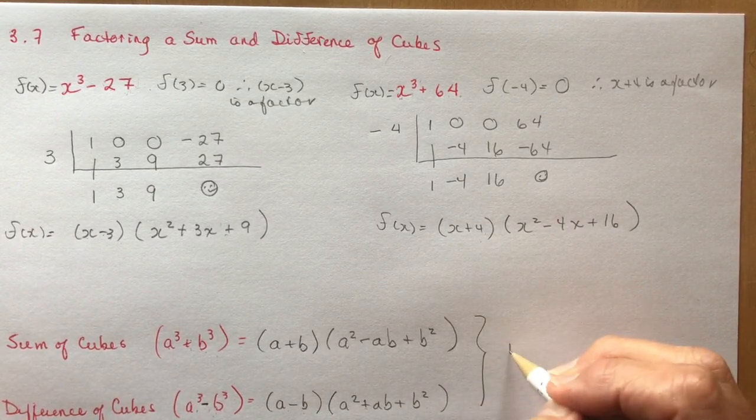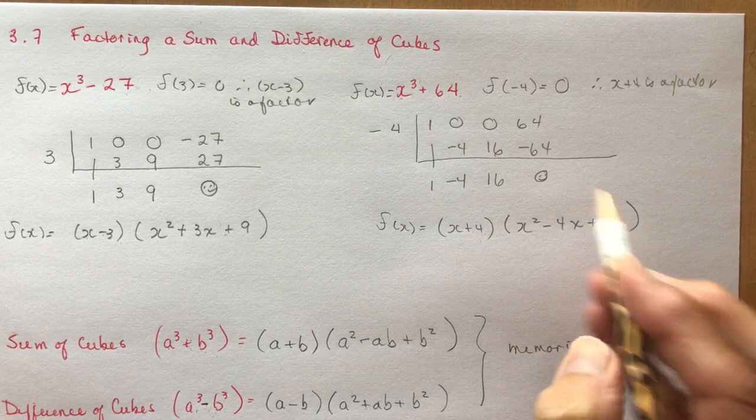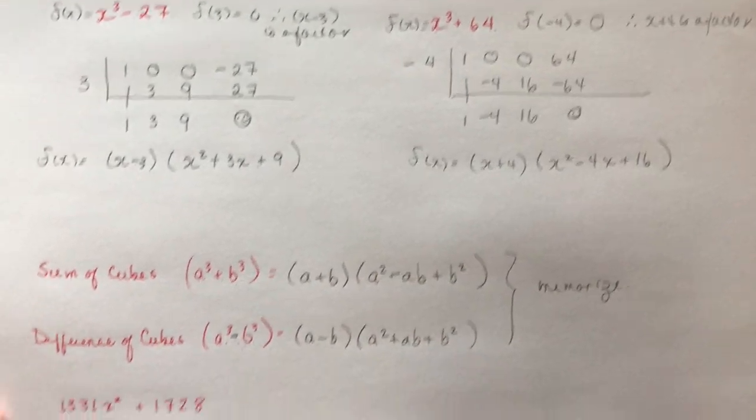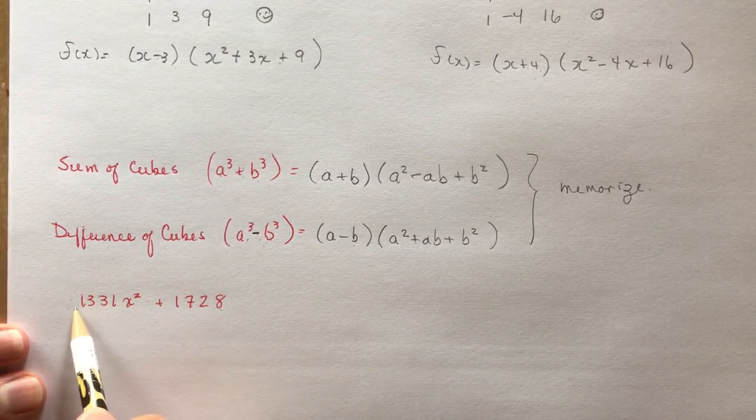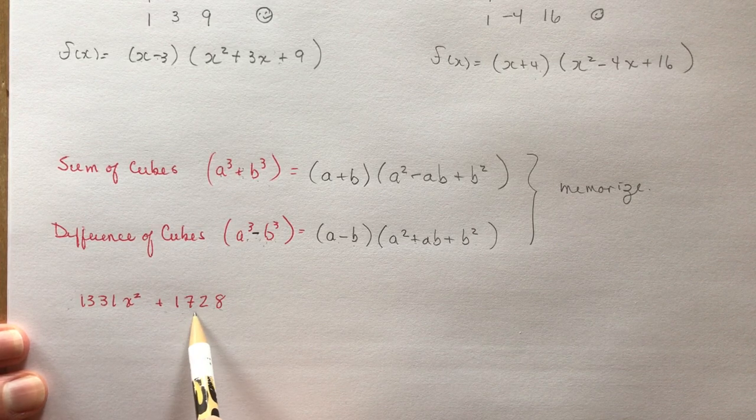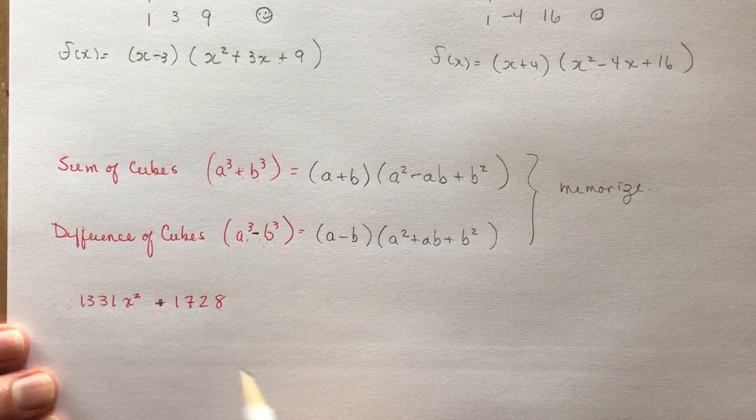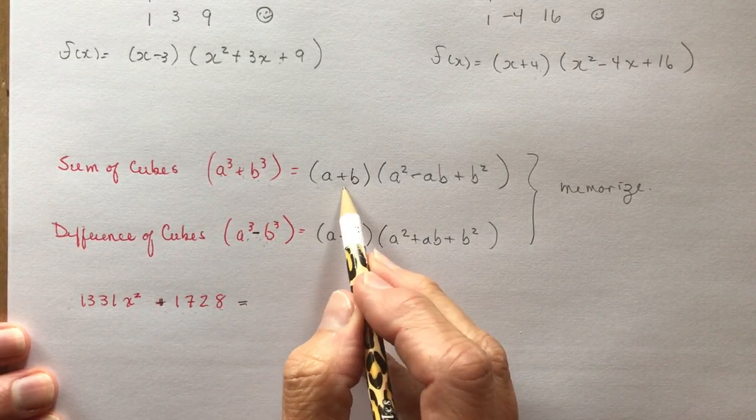You either memorize these ones, or you can use your synthetic division to factor them. So let's try one from your homework assignment that's a little bit, here's the number here, 1331x cubed plus 1728. So it's a sum of cubes.